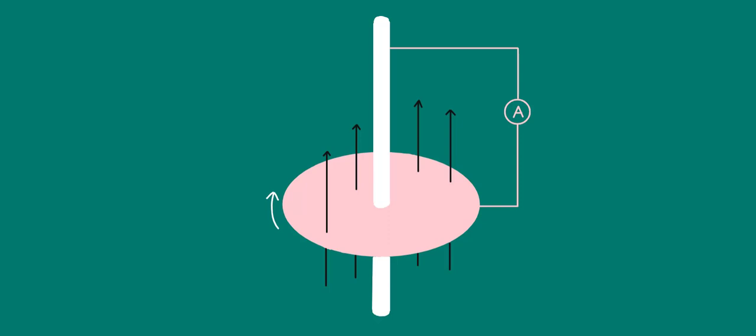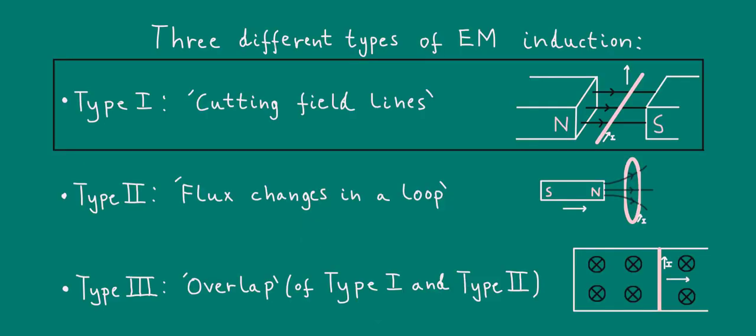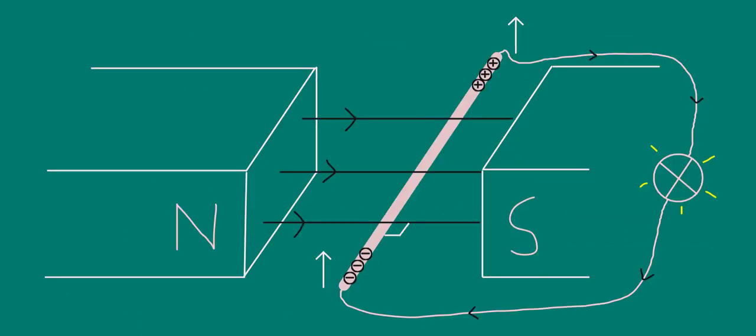Recall that at the beginning of the video, I mentioned that the Faraday disc dynamo is an example of the type of induction that I've called cutting field lines. Hopefully, you remember that cutting field lines refers to when, for example, a wire moves up, cutting across horizontal magnetic field lines, resulting in an induced EMF and current.